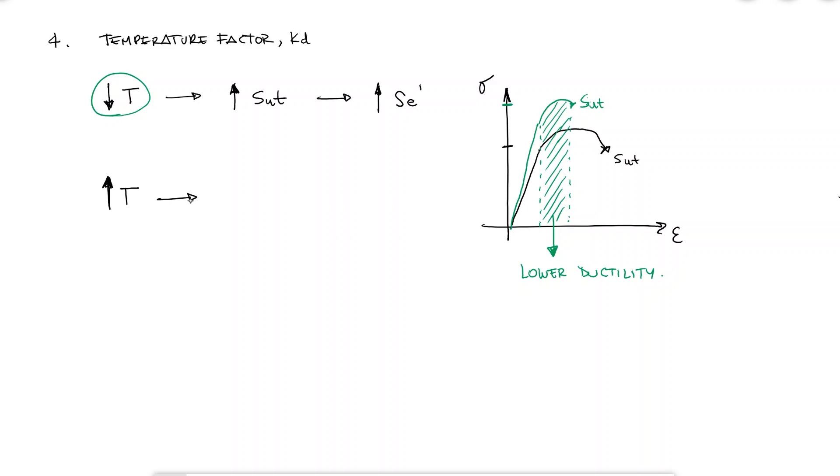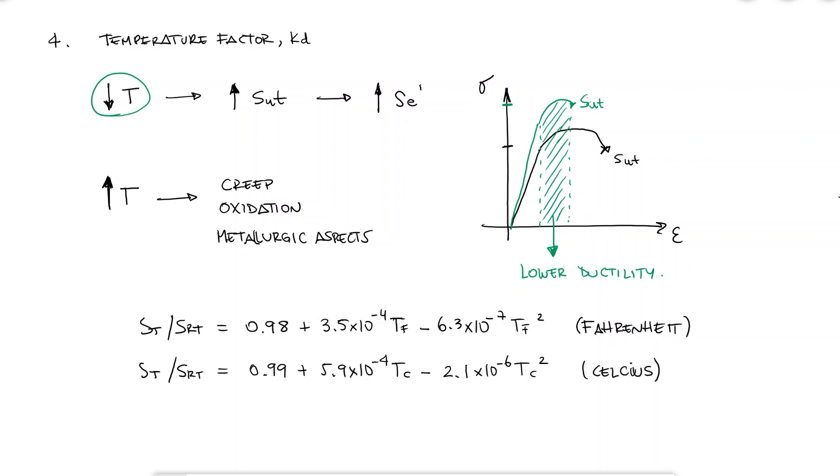High temperatures are also a cause for concern, since even temperatures above 40% of the melting temperature in Kelvin can give rise to phenomena like oxidation and creep. Whatever the case, we can find experimental curves for the temperature factor Kd of different materials. For example, for steels, we use curve fit polynomials for experimental results, one for temperatures in Fahrenheit and one for Celsius, where ST over SRT is the ratio between ultimate strengths at the operating temperature and room temperature. And since the theoretical endurance limit is found as a fraction of the ultimate strength, and therefore it is a linear relationship, we call this ST over SRT ratio the temperature factor Kd.